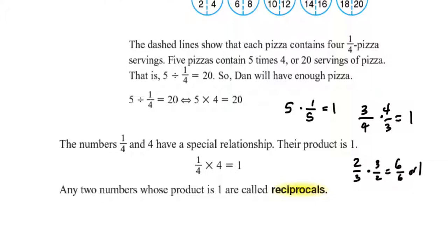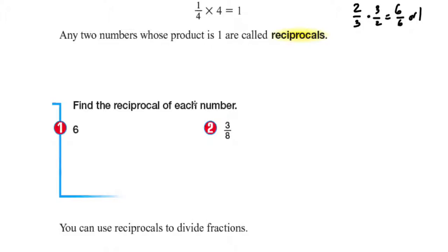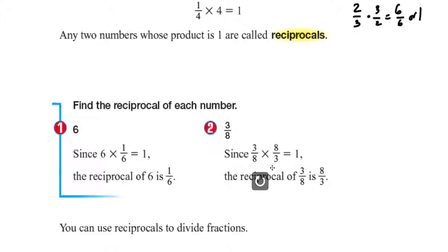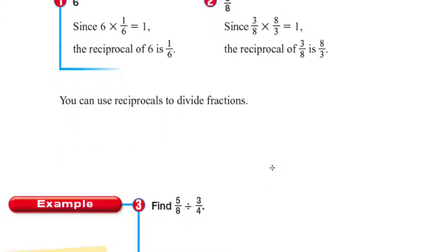Let's look at examples of finding the reciprocal of each number. What would you multiply six by to get to one? That would be one-sixth, so six times one-sixth equals one — the reciprocal of six is one-sixth. For three-eighths: since three-eighths times eight over three equals one, the reciprocal of three-eighths is eight over three. And you can use reciprocals to divide fractions.